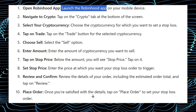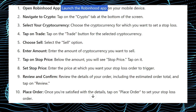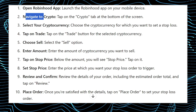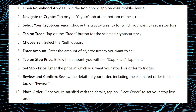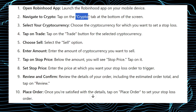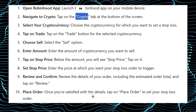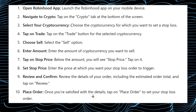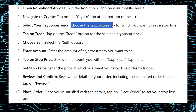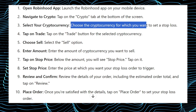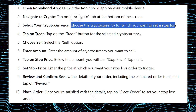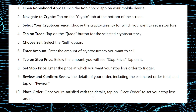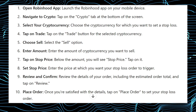First things first, launch your Robinhood app on your mobile phone. Second, navigate to crypto — just tap on the crypto tab which should be at the bottom of the screen. Now select the cryptocurrency for which you want to set up a stop loss.